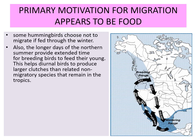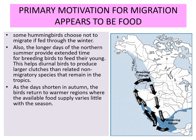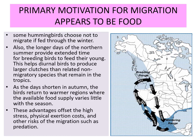A longer day in the northern summer provides extended time for breeding birds to feed their young, helping them to produce larger clutches compared to species in tropical areas. As the days shorten in autumn, birds return to warmer regions where the available food supply varies little with the season. These advantages offset the high stress, physiological exertion costs, and other risks of migration such as predation.